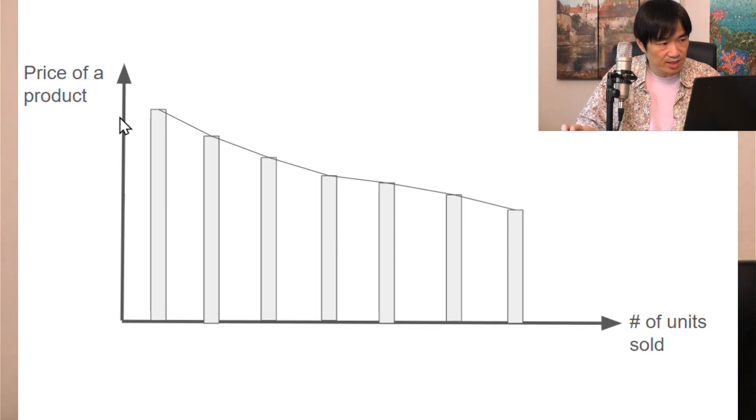When the price is this high, only the first customer will buy it. And when the price is this high, two people will buy it. And when the price is this high, all these five people will buy it. So this is called a demand curve. And obviously, it's going down.